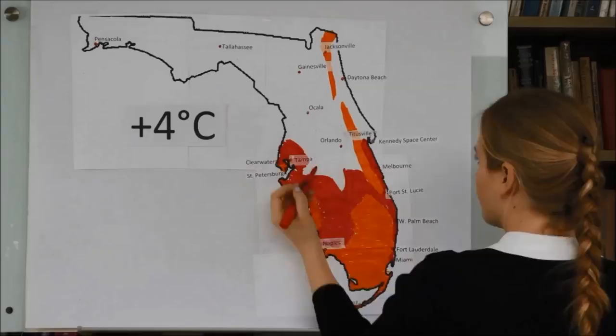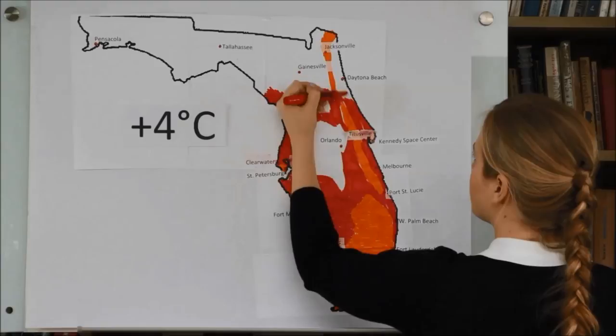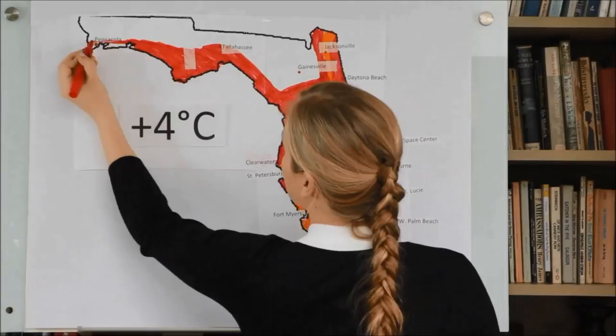The last time global warming reached 3 to 4 degrees Celsius, sea level was 20 to 30 meters, that's 65 to 100 feet higher than today, which would submerge most of Florida, the Netherlands, Bangladesh, and much of China.